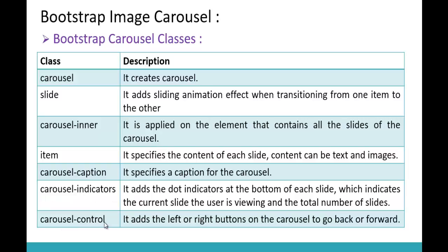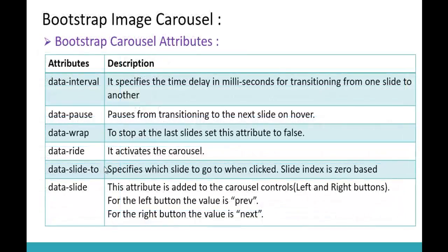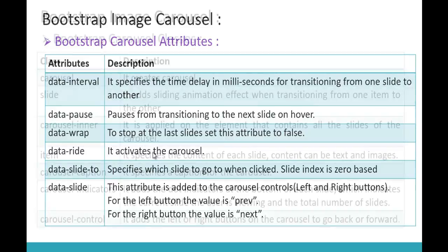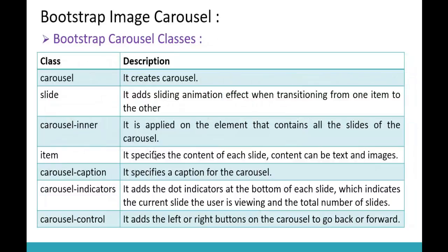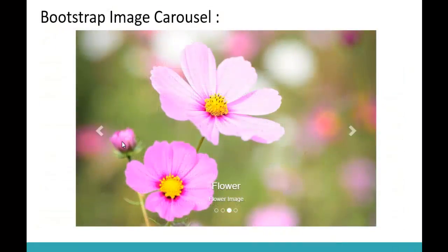We also need to add carousel data attributes. The attributes include data-interval, data-pause, data-wrap, data-ride, data-slide-to, and data-slide. With the help of these carousel attributes and carousel classes we are going to build this type of image carousel.